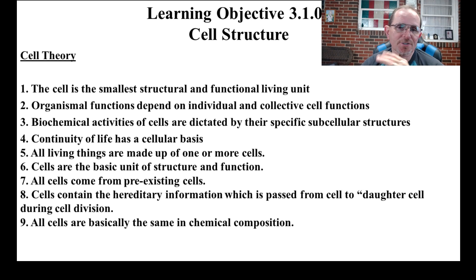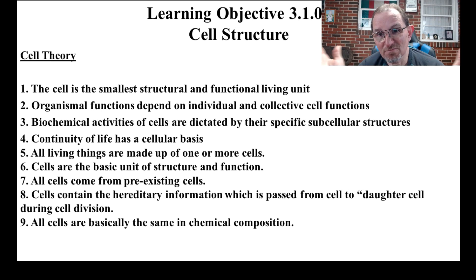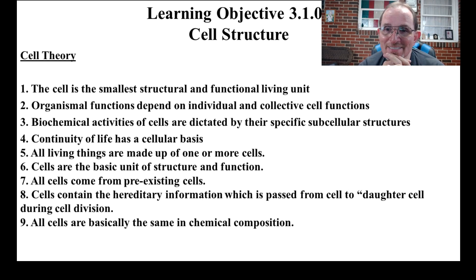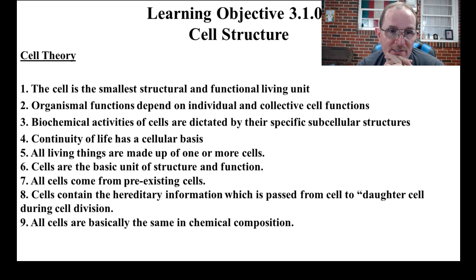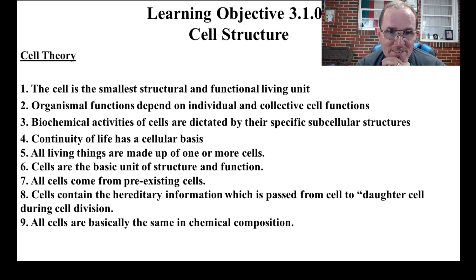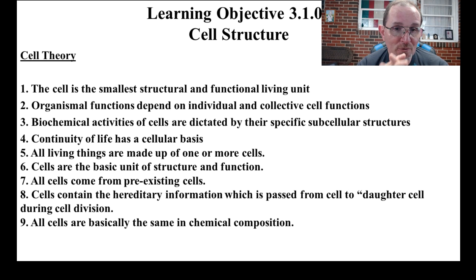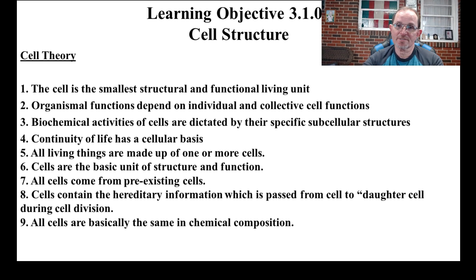Cell structure, the cell theory. What has been postulated and all but proven is that the cell is our smallest living thing. Whether it's a bacteria or one of the cells in our body, the cell is the lowest level that we can consider living. We talked about that a little bit in chapter one. Everything that our body does — the organs and the entire body — depend on the cells doing their job.